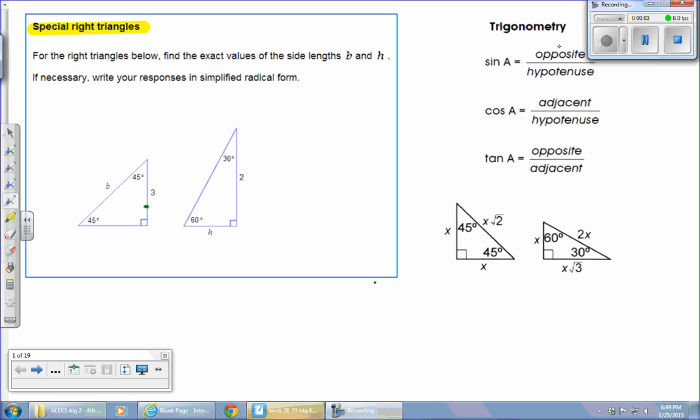Okay, so today we're going to talk about special right triangles. That's one of the topics in your goal topic list for the trig section. You're going to be looking at two specific types of triangles.